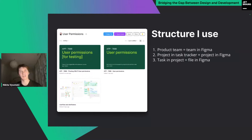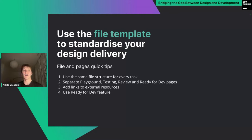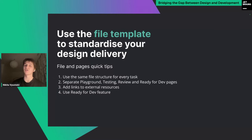The structure I use duplicates the task tracker structure: product team is the team in Figma, project is the project in Figma, and task is the file. You should have a file template because it standardizes design delivery and each developer knows what to expect — they know where to find designs for them and which pages they don't need to see. Tips: separate pages for developers, for testing, and for the playground; use the same file structure for every task; and try to use Figma's new 'Ready for Development' feature.